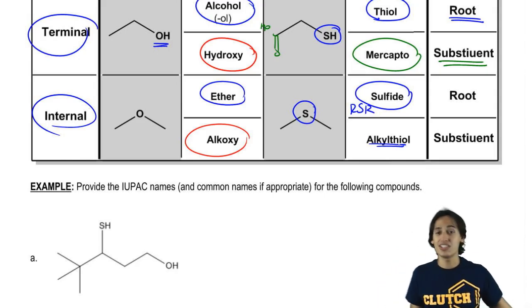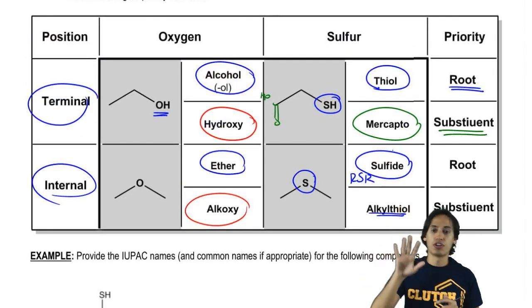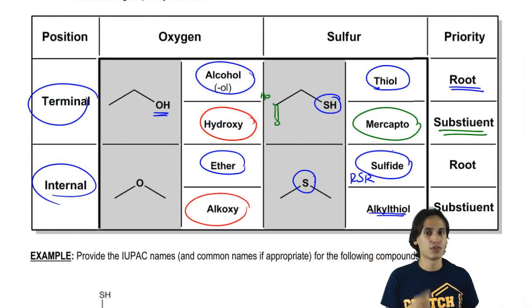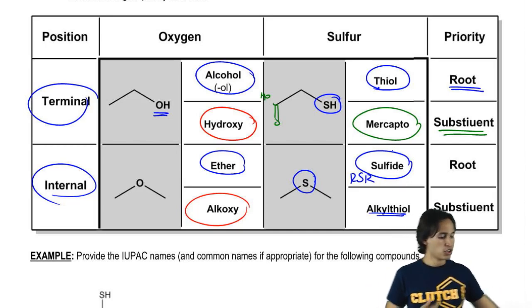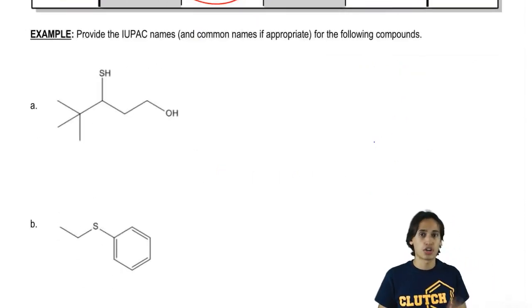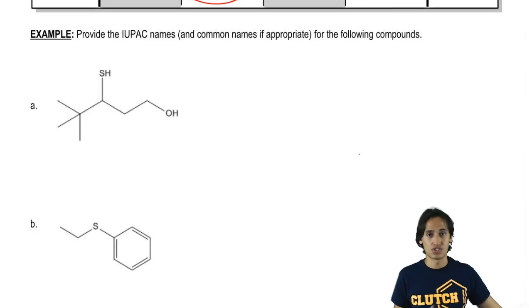So I know that was a lot to walk through, but hopefully by thinking of sulfur in the context of oxygen, what you already know from oxygen, that's going to make it easier for you to get a grasp on it. The only thing is there's just some funky words we have to remember. So now we have some practice problems that I want you to go ahead and do from this chart. Try to get the exact name for this first one, try to do the whole thing, and then I'll give you the answer.